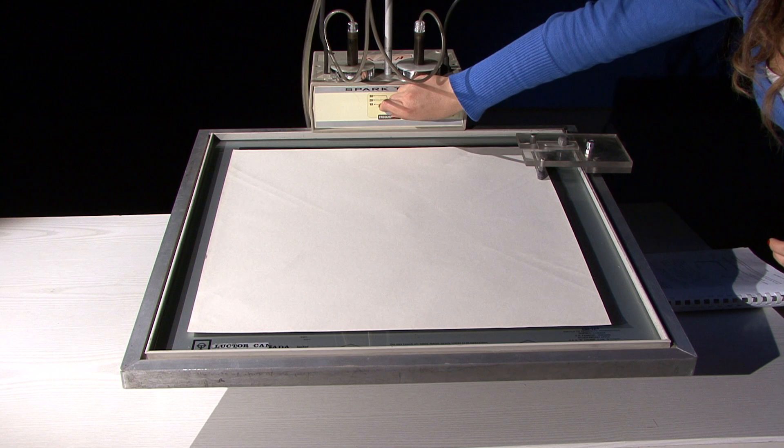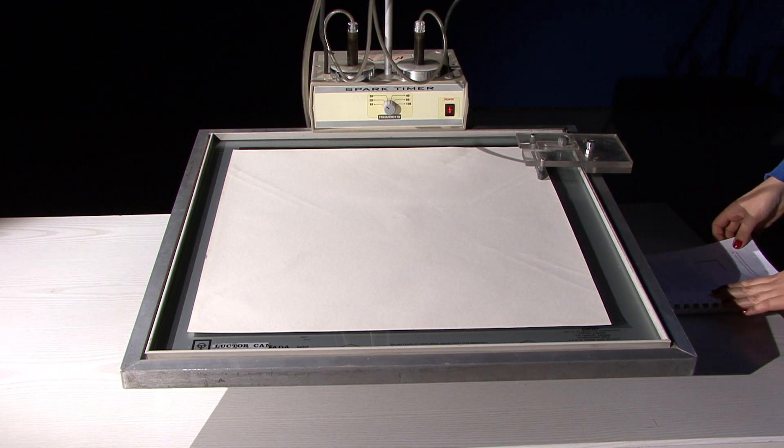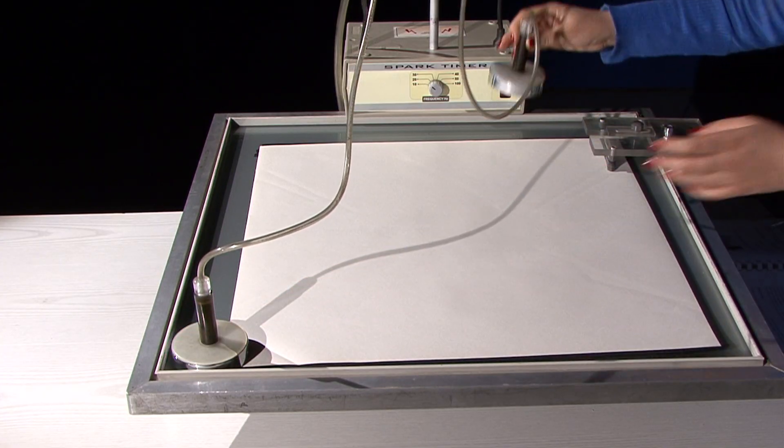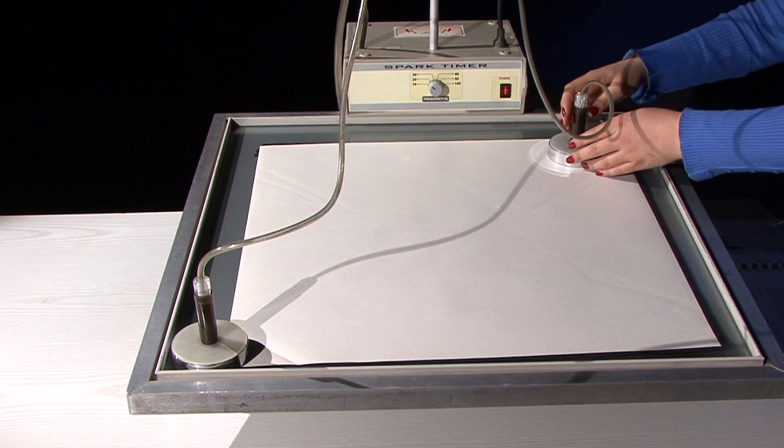Set the frequency of the spark timer. Place one of the pucks in a corner. Place the other puck on the higher side of the table.